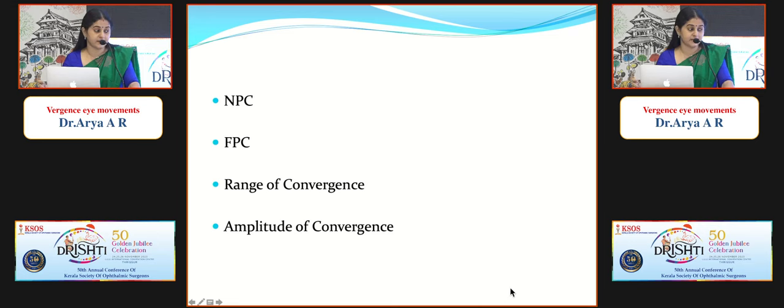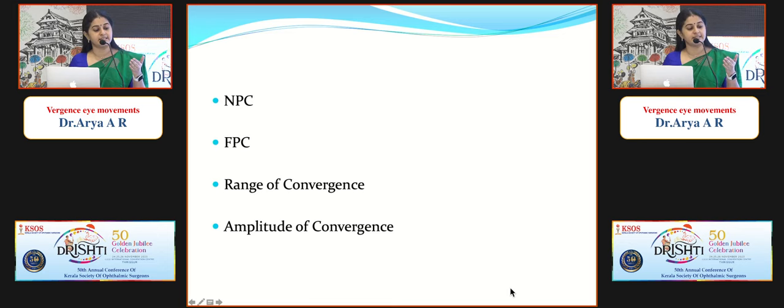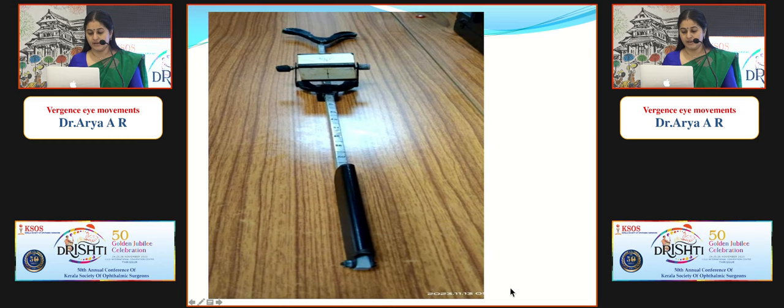Key terms regarding convergence: the near point of convergence (NPC) is the nearest point at which the patient sees singly; the far point of convergence lies behind the eyes, as they are in slight divergence at rest. The range of convergence is the difference between NPC and FPC. The amplitude of convergence is the difference between the nearest point of single vision and the far point.